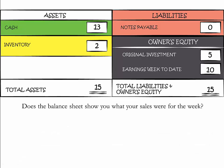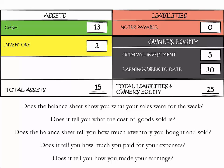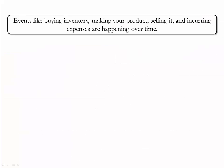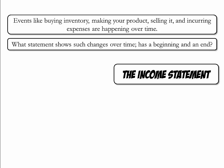Does the balance sheet show you what your sales were for the week? No. Does it tell you the cost of goods sold or how much inventory you bought and sold? No — it only tells me what I currently have in inventory. Does it tell you how much you paid for your expenses? No — I cannot find the glass rental fee, advertising, or land rental anywhere. Does it tell you how you made your earnings? No — it only tells me what my earnings week-to-date are, not how I made them. Events like buying inventory, making your product, selling it, and incurring expenses happen over time. The statement that shows such changes over time and has a beginning and an end is the income statement.